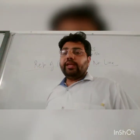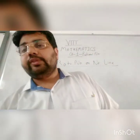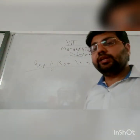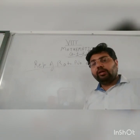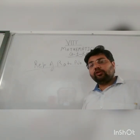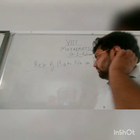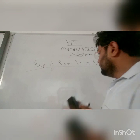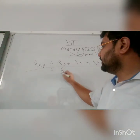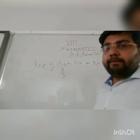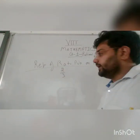Now we can easily represent integers like 1, 2, 3, 4, 5, 6 on the number line, since integers are also rational numbers. But suppose we have to represent 2 by 3 — how will we do it?